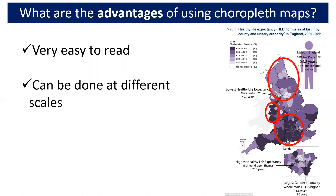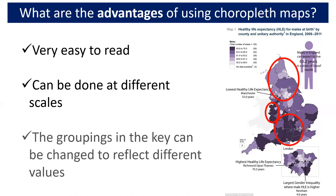Choropleth maps can also be done at different scales. Here we have a map of England at a national scale, but we've also got a local scale map of London. So it can be done globally, nationally and also locally. The final advantage is that the groupings in the key — the numbers we use — can be adapted to reflect different values. Here they've gone from 55 at the bottom, the lowest value, up to 70.3 years as the highest value.